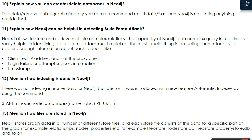Question 13: How are files stored in Neo4j? Neo4j stores graph data in a number of different store files, and each store file contains data for a specific part of the graph — for example, relationships, nodes, properties, etc. Examples include neostore.nodestore.db and neostore.propertystore.db.